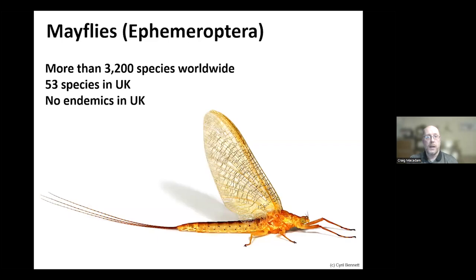In the UK, across the world there are around 3,200 species. In the UK we've got 53 species, so a very small, manageable group to identify and get used to. We don't have any endemic species or subspecies in the UK, so we're just concerned with those 53 species.